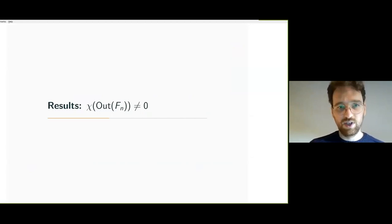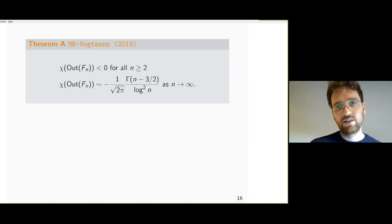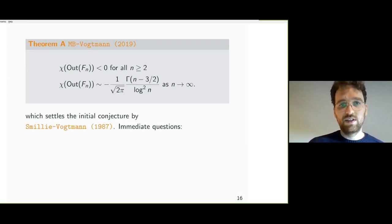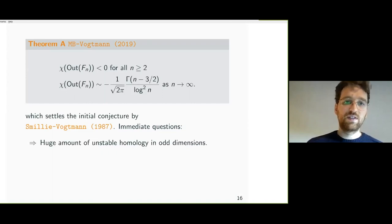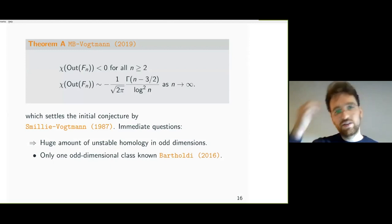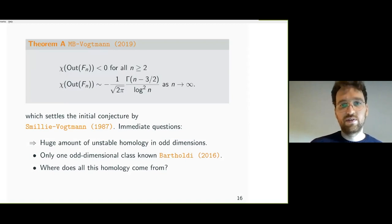The theorem explicitly states that the Euler characteristic is always less than zero for n > 2, with a specific growth rate given by the gamma function for n going to infinity — with a curious log-squared term in the denominator that is hard to interpret intuitively. This settles the initial conjecture, but raises immediate questions: the large growth rate indicates huge amounts of homology in odd dimensions, and nobody knows where this homology comes from. Only one odd-dimensional class is known, in rank 7, due to Bartoldi in 2016.